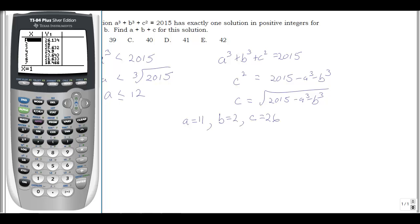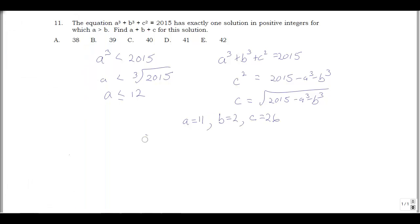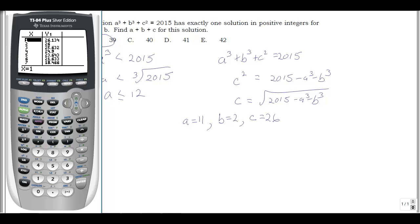So there's really our answer. And then you can add those together: 11 plus 26 is 37, plus 2 is 39. I'm going to circle that, 39 looks like our answer here. One thing I would suggest here with this type of question is check to make sure that 11 to the 3rd plus 2 to the 3rd plus 26 squared actually gives you 2015. It does.